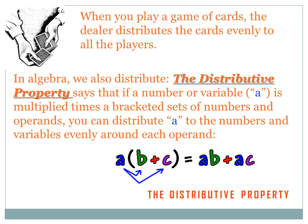In algebra, we also distribute. The Distributive Property says that if a number or variable, a, is multiplied times a bracketed set of numbers and operants, we can distribute a to the numbers and variables evenly around each operant. For instance, in the expression a times (b plus c), I can simplify that by multiplying the a times each of the variables inside the brackets and around the operant. So, a times (b plus c) equals a times b plus a times c.